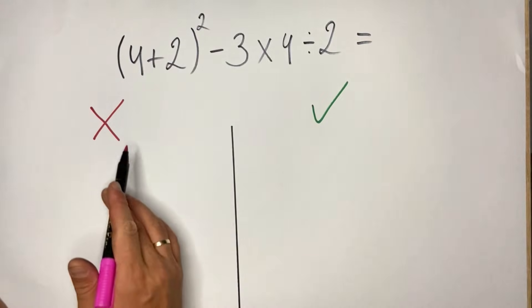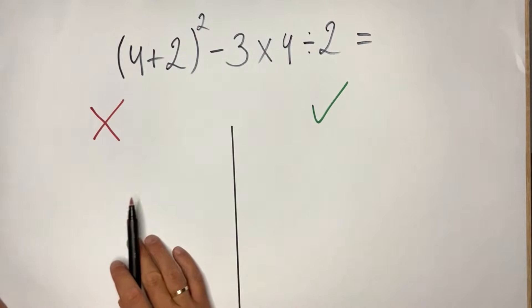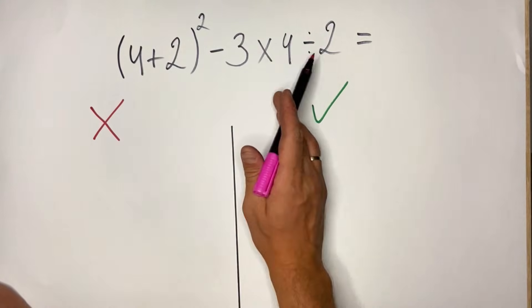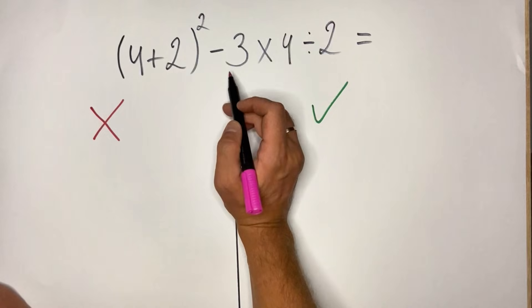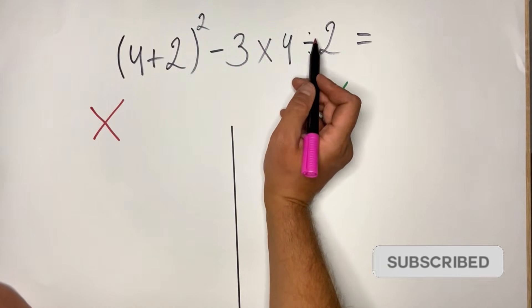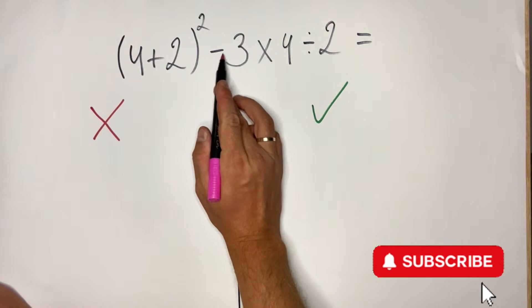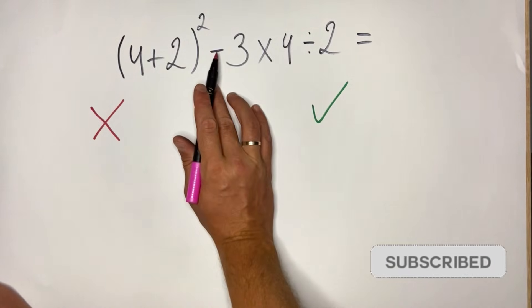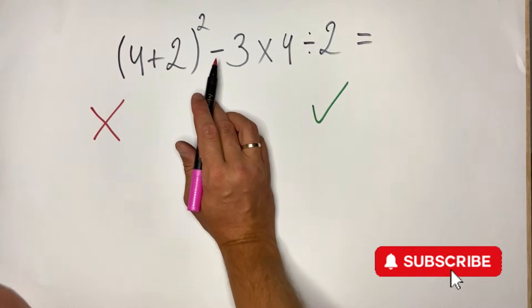In this case, as usual on the left side, we can start with the most common mistakes that people are doing. What I can see in this expression is that people would really disregard the order of operation when it comes to multiplication and division ahead of the subtraction.